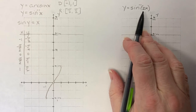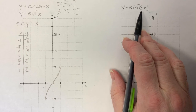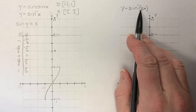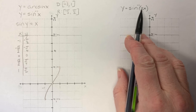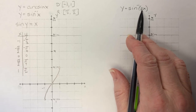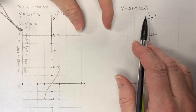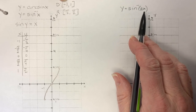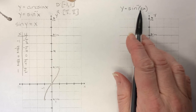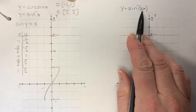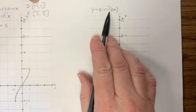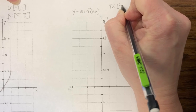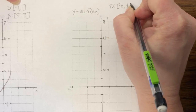All the same rules — vertical stretch, vertical shrink, horizontal stretch, horizontal shrink — are important to remember. If I have a number inside the function, that's going to cause a horizontal shrink, and a horizontal shrink is going to affect my domain. So instead of going from negative one to one, with a horizontal shrink of one half, my domain is only going to go from negative one half to positive one half.